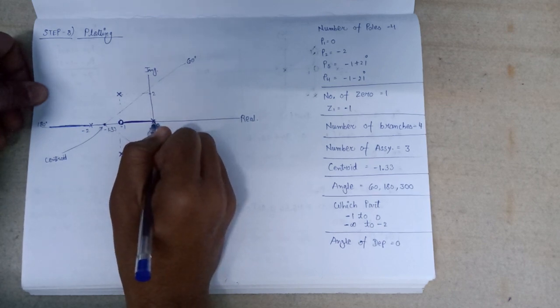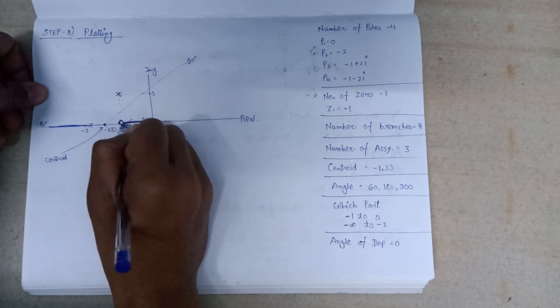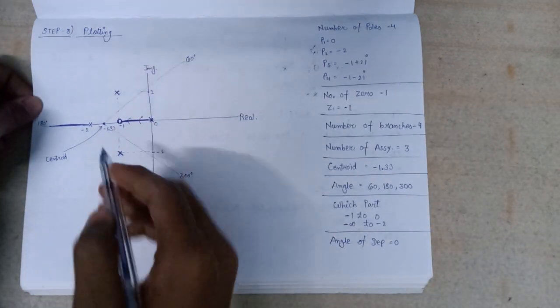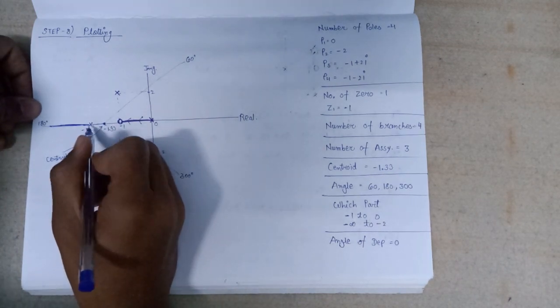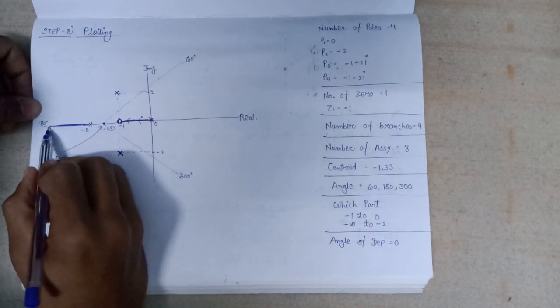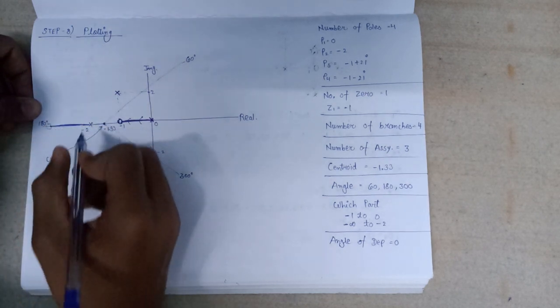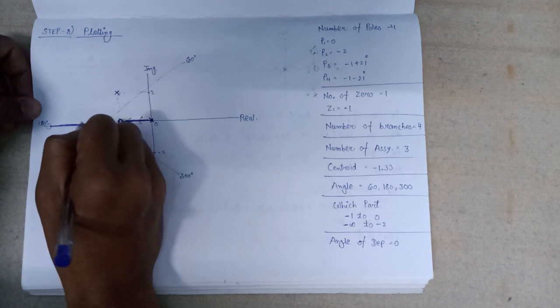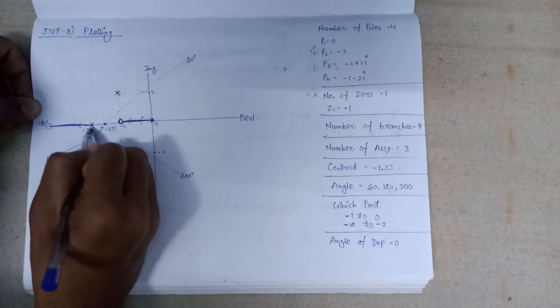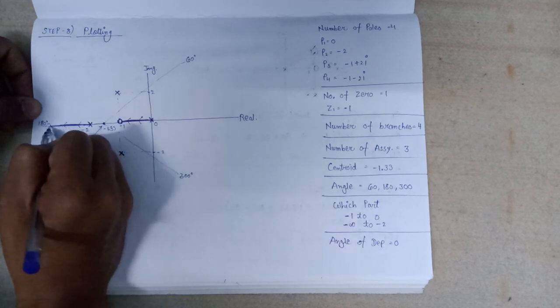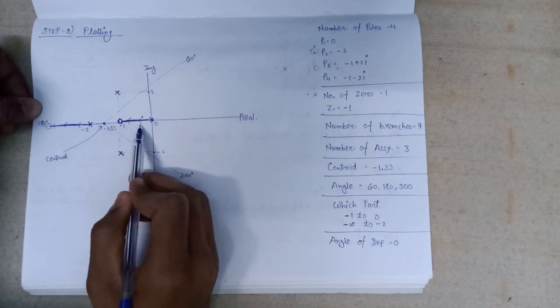And since there are no other zeros for its emerging, that's why we consider it as an imaginary zero. So this pole also goes in this direction. Branch of the root locus will emerge from this pole and go in this direction towards the imaginary zero.